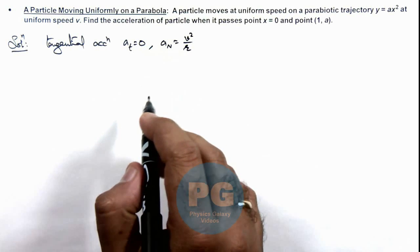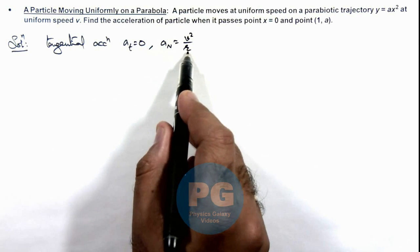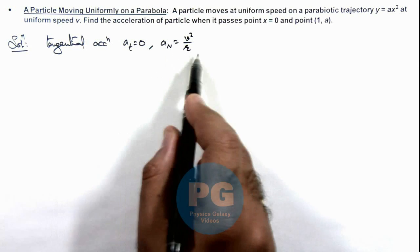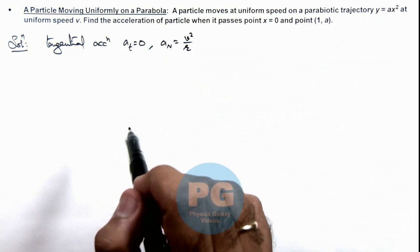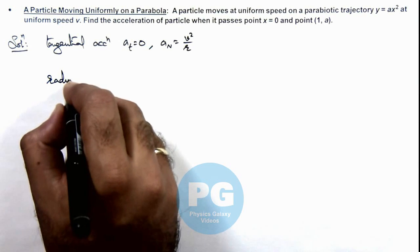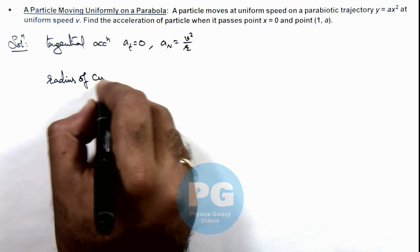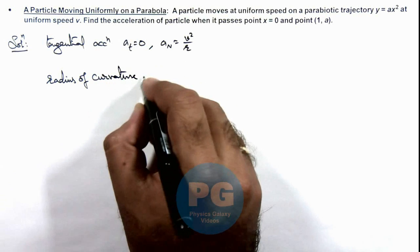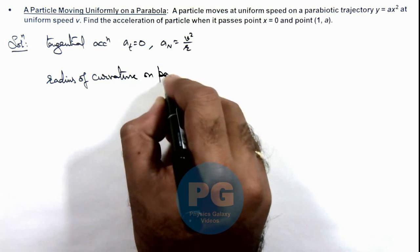Now in this situation, the radius of curvature of the particle trajectory at various points we can calculate by using the equation of trajectory, and we can directly write the radius of curvature on the particle trajectory.